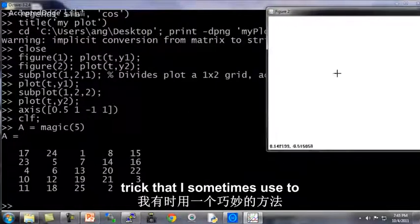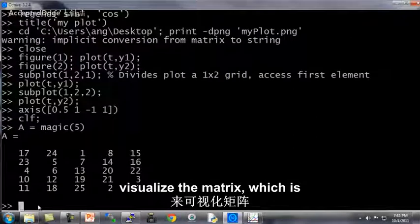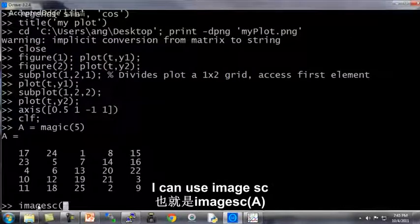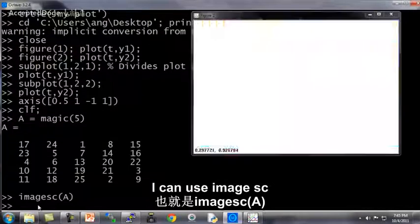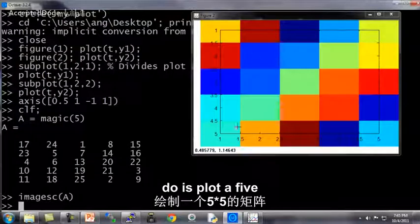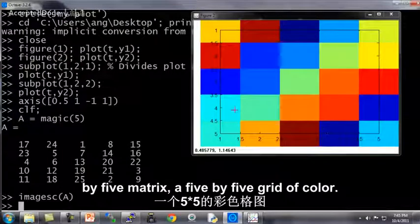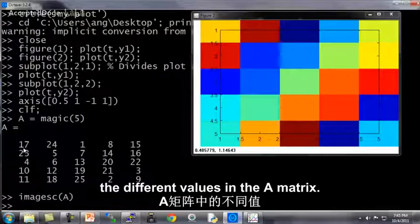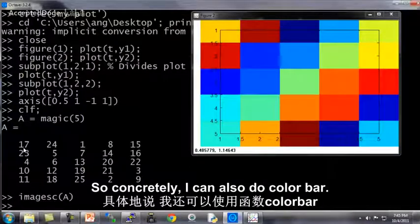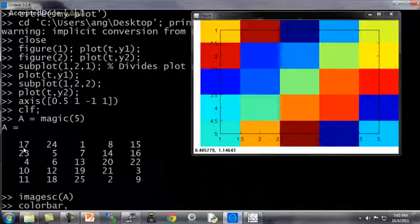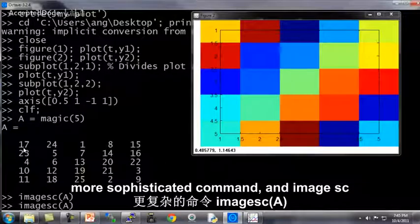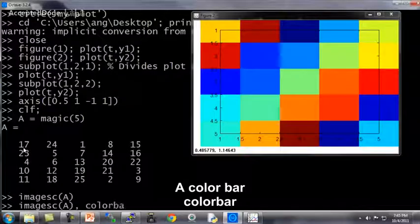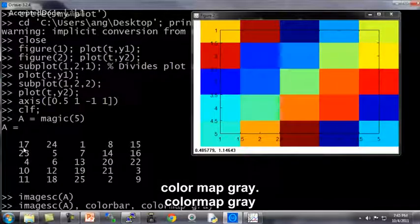There's a neat trick that I sometimes use to visualize a matrix, which is I can use image SC of A. And what this will do is this will plot a 5 by 5 matrix. So I'll take my matrix. I'll plot this as a 5 by 5 grid of colors, where the different colors correspond to the different values in the A matrix. So concretely, I can also do color bar. Let me use a more sophisticated command. Image SC of A, color bar, color, map, gray.